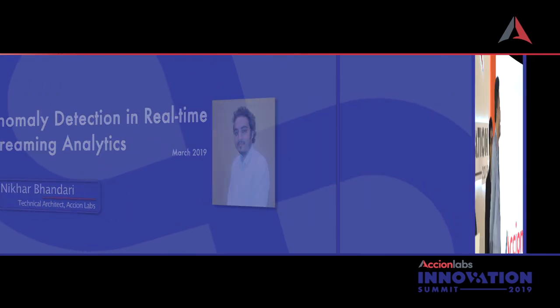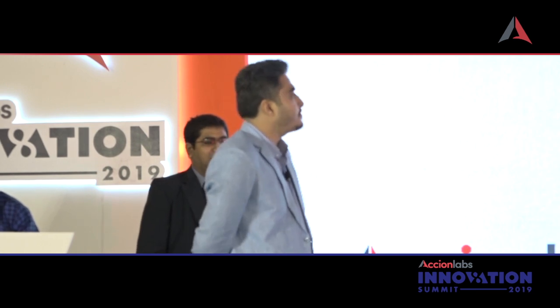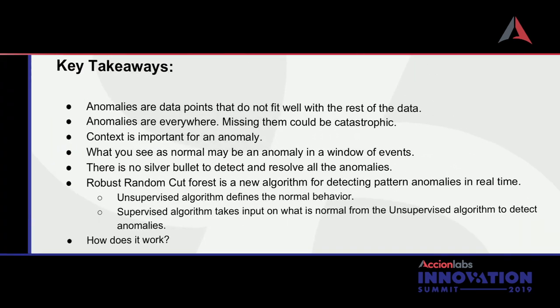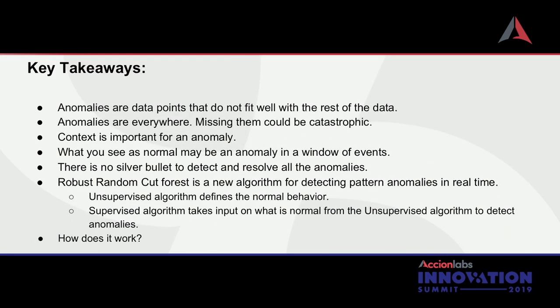Anomalies are data points that do not fit well with the rest of the data. Anomalies are everywhere, and missing them could be dangerous. Context is important for an anomaly — it's relative. What you see as normal may be an anomaly in a window of events.